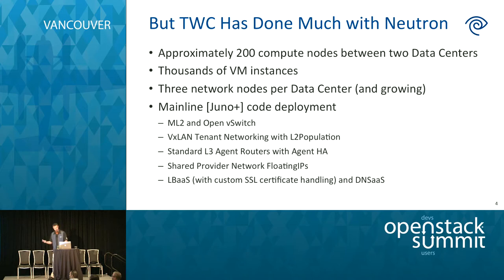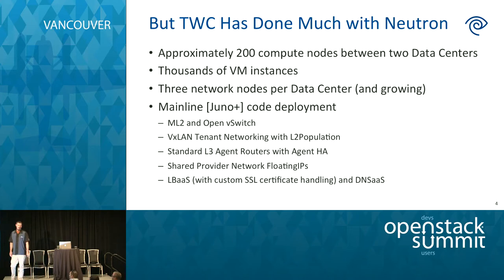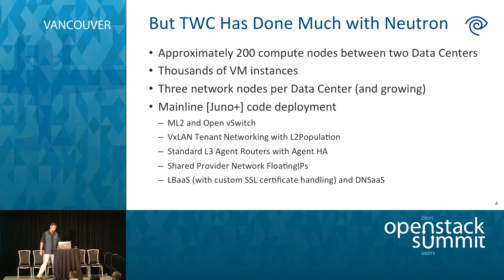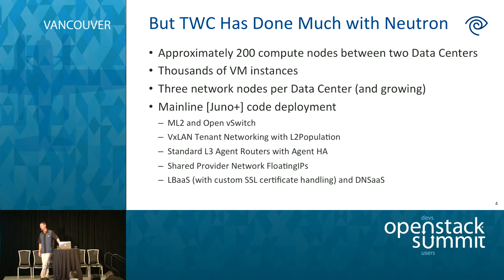We also have L2 Population in the mix and standard legacy routers. We currently have a bug we're tracking upstream: because we're using L2 Pop, the HA router doesn't quite work yet. But we're working on that. We're adding new services all the time — load balancing as a service is going into beta production for select customers next month, and DNS as a service is in production now.